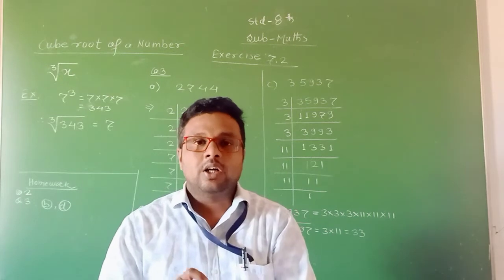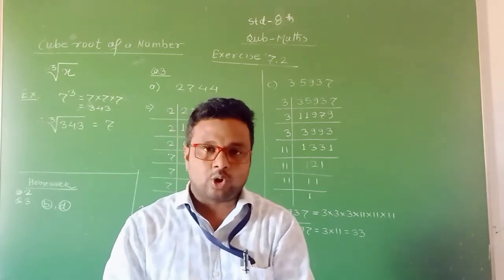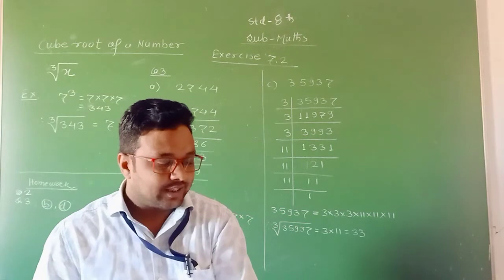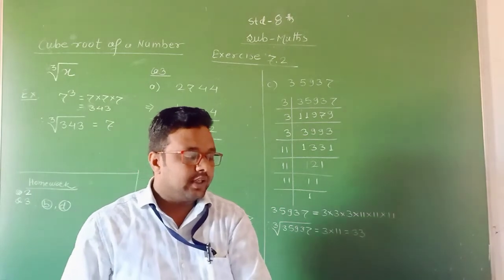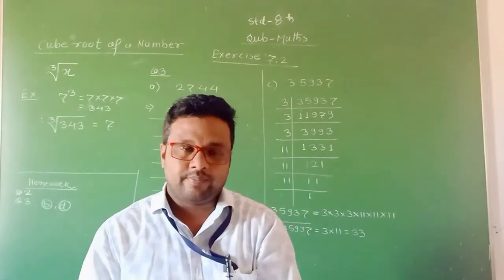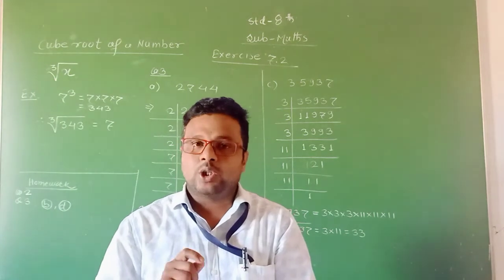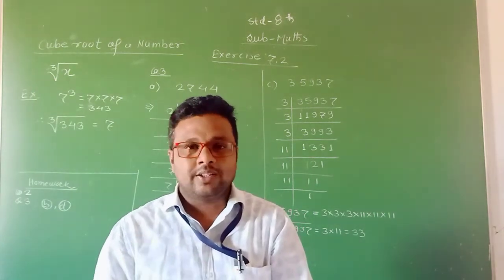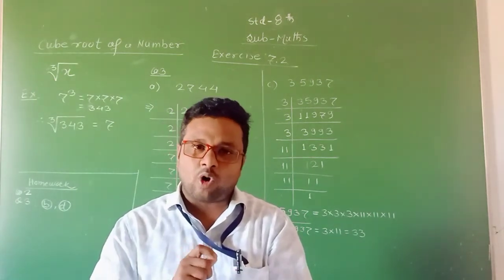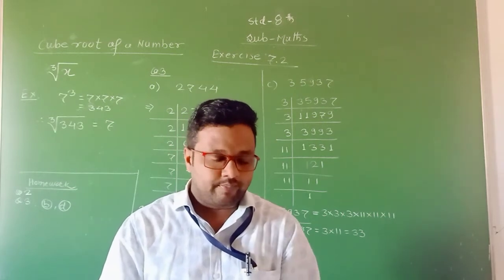We can take the cube root of negative integers also. Statement B: Cube of an odd number is odd. We know the property — cube of an odd number is odd. Therefore, its cube root is also an odd number. This statement is true, so we write T.